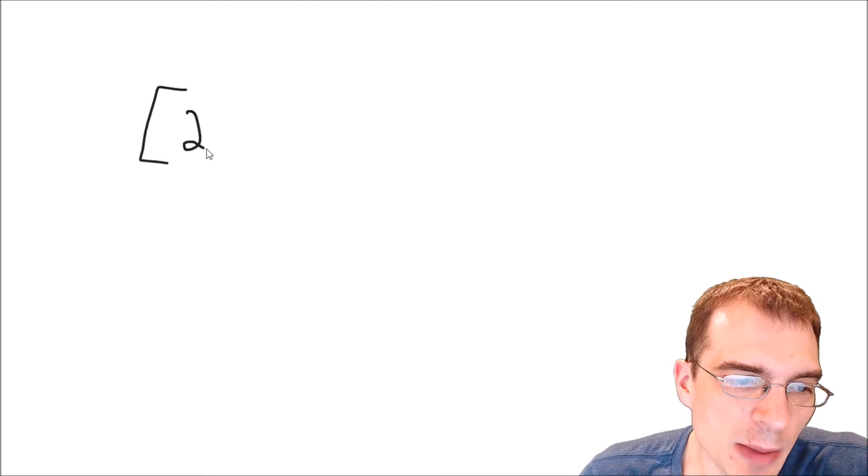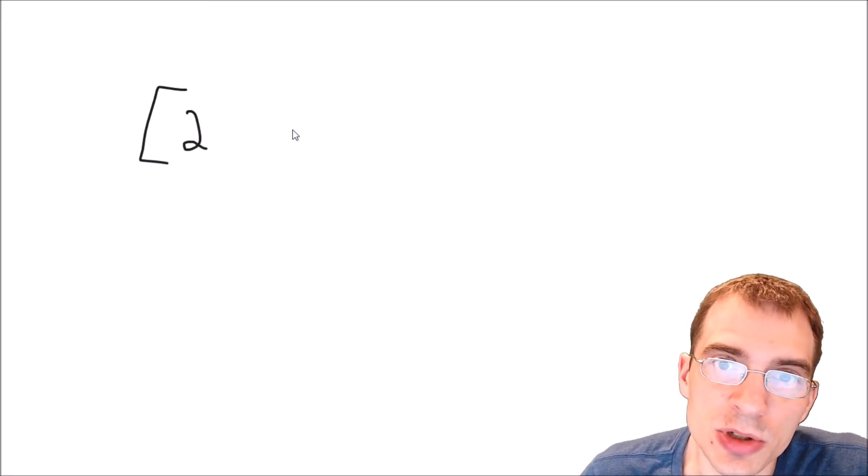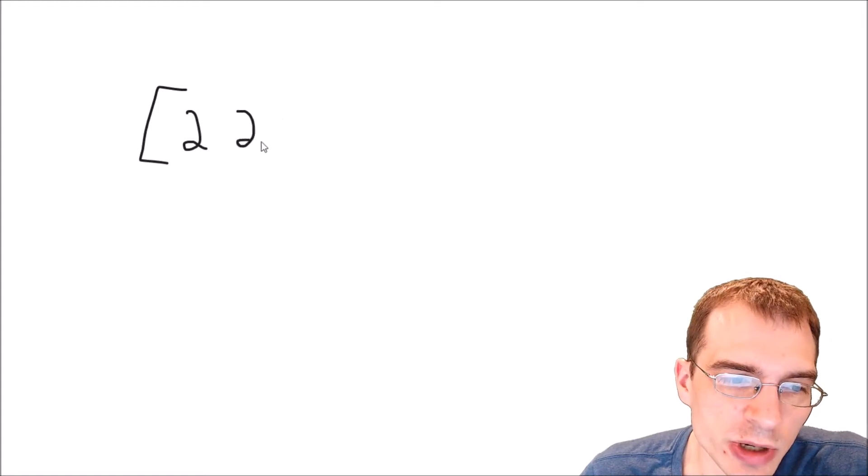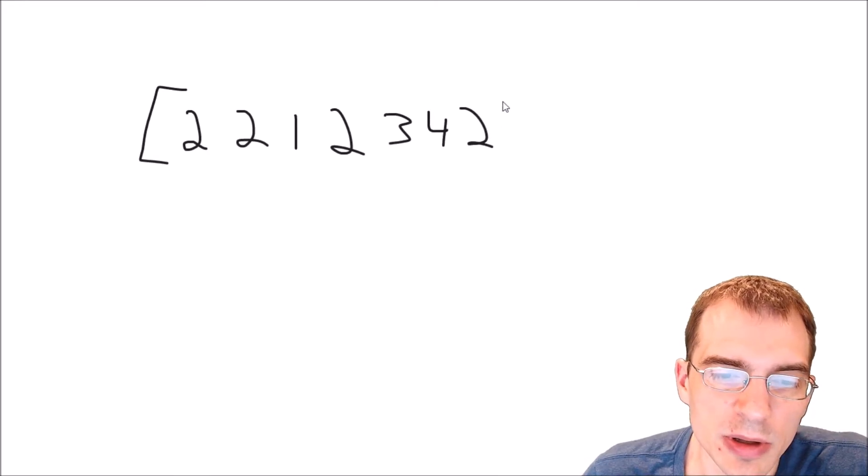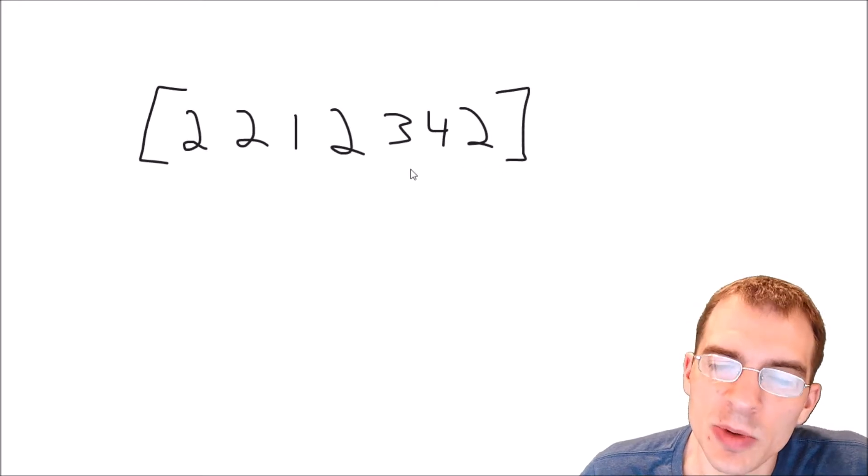It just so happens that the element that occurs most often also will occur at least or more than n divided by 2 ways. But the crux of the problem is we're finding whatever element appears the majority of the time or more than half of the time, which is also the element that appears most often.